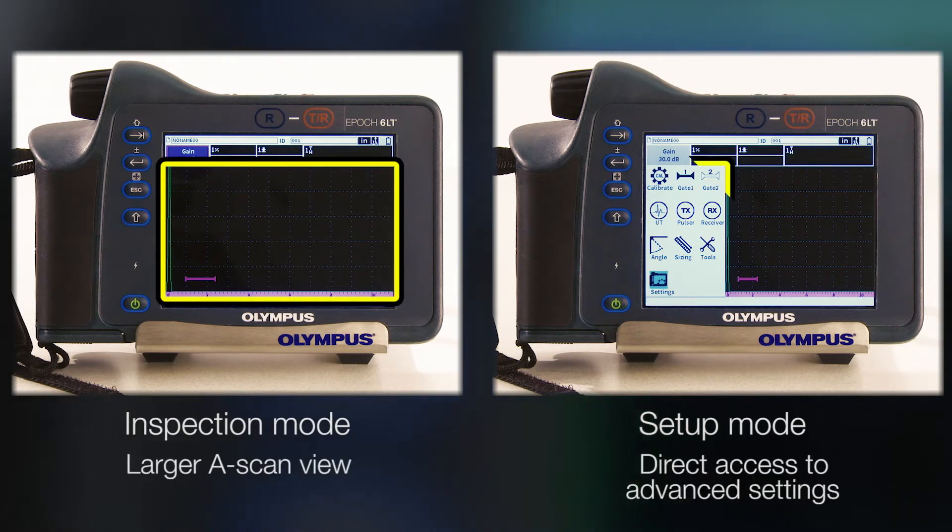The layout of inspection mode is similar to setup mode. The fundamental difference is a larger A-scan view instead of direct access to more advanced settings. Both modes operate similarly. Press tab to cycle through the different selectable groups and press enter to access the respective pop-up menus.